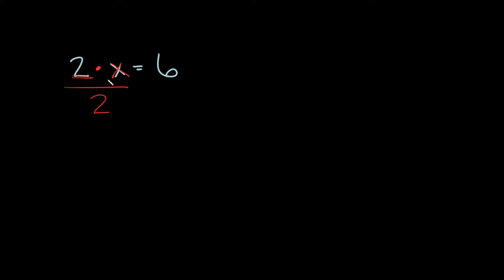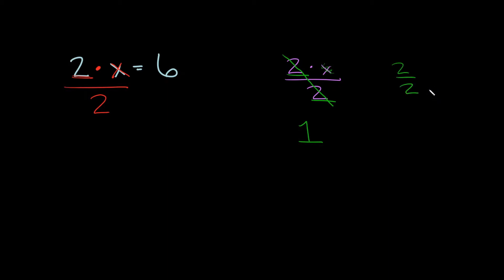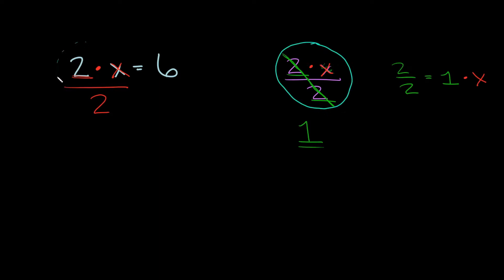Why are we going to do that? Well, we basically have a fraction now. Let me rewrite this left side: we're going to have 2 times x over 2. On top we have 2 times x, on the bottom we have 2. Now we have the same number on top and on the bottom, so these reduce down to just 1. For example, if I just had 2 over 2, that equals 1. But in our problem we're also multiplying by x, so what we have reduces the same way.